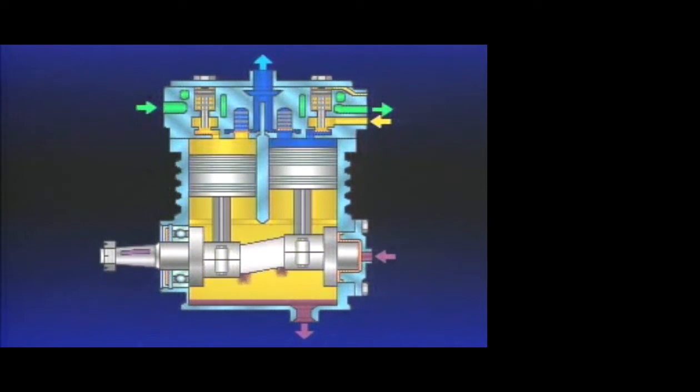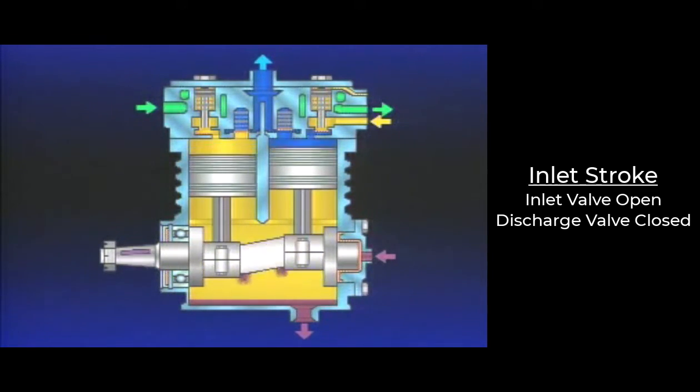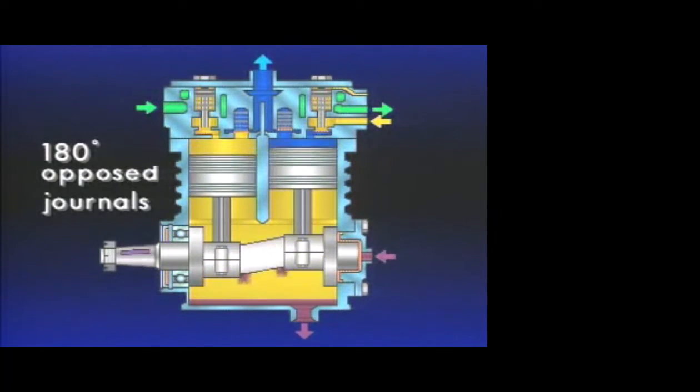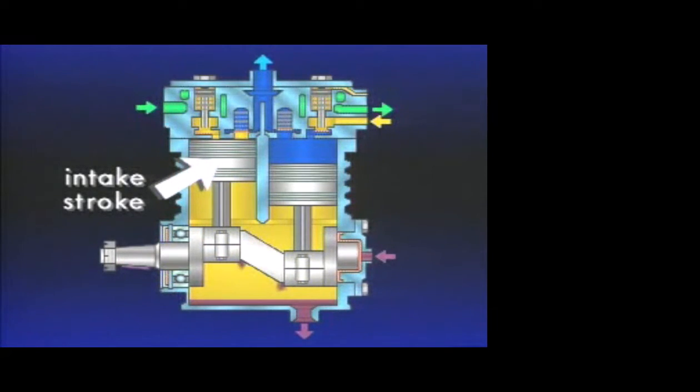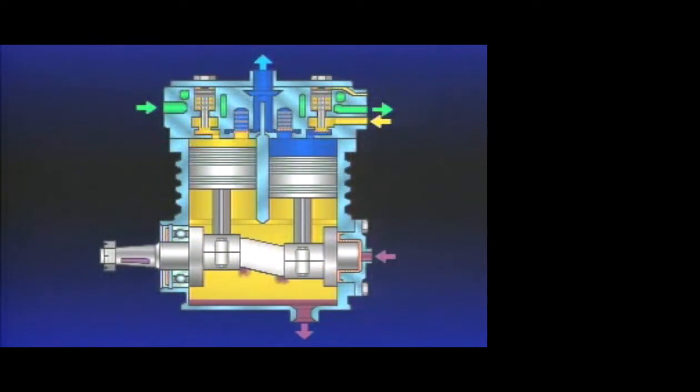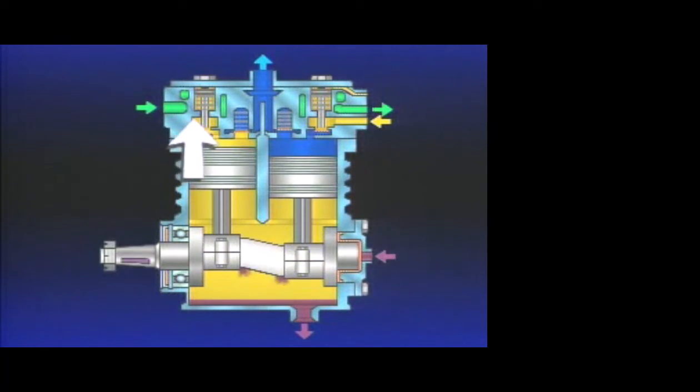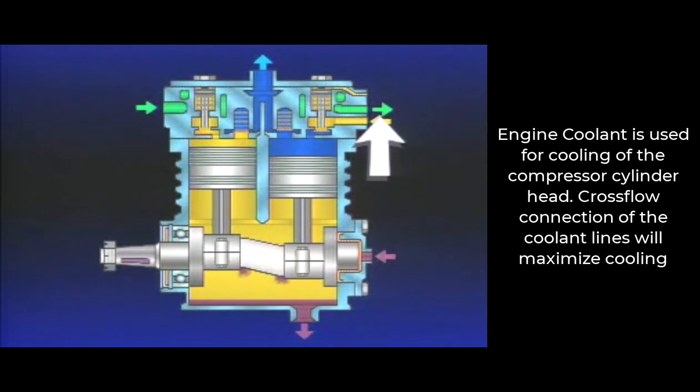Returning to our full cutaway view of the compressor, we find that since the compressor contains two cylinders and the crankshaft has 180-degree opposed journals, one piston will be on its intake stroke while the other is compressing, building to maximum pressure. While this is occurring, a constant flow of engine coolant is routed through the cylinder head cavities to dissipate the heat generated by the compressor during air compression.